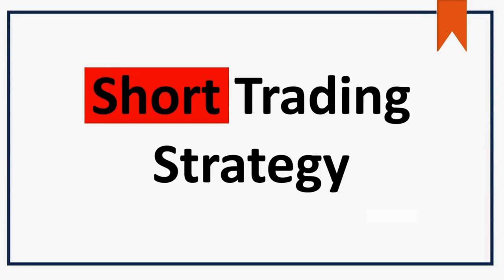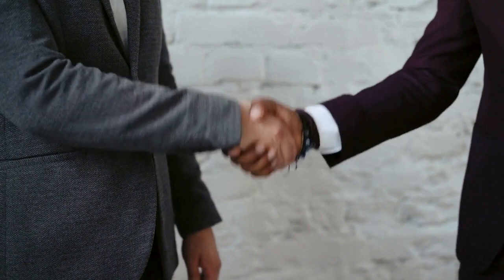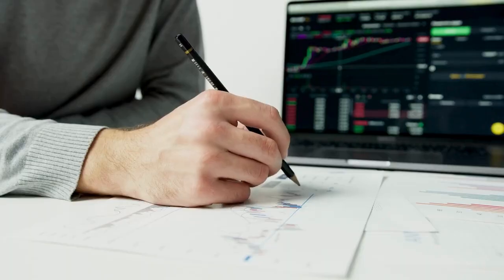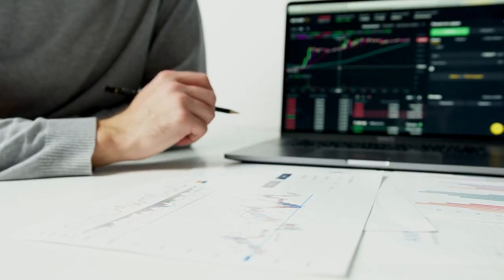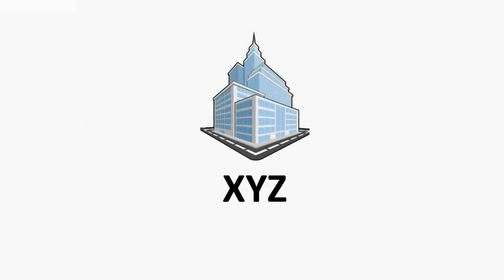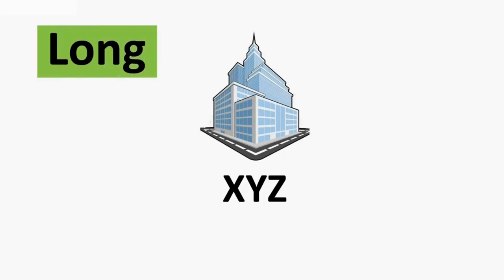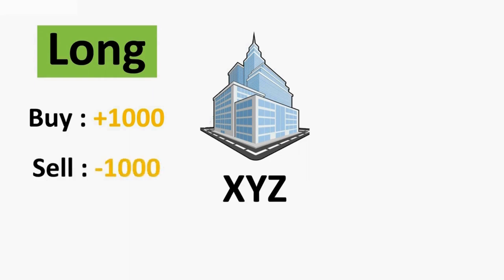A question might arise: how can we sell a stock if we don't own it? Let me explain this with some basic math. Let's say there is a company named XYZ listed in the stock market. You analyze that the stock is going to go bullish, so you take a long entry — let's say you bought shares of 1,000 quantity. After making some profit or loss, you will sell that stock, so your selling quantity will be minus 1,000. After this transaction, the quantity you hold will be zero.